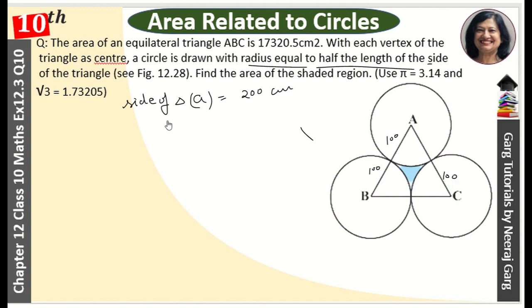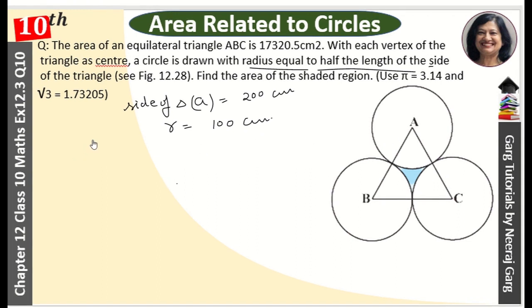Area of shaded region, that is equal to area of triangle ABC minus three sectors. Thrice into area of sector, and it will be 60 degrees because it is equilateral triangle.